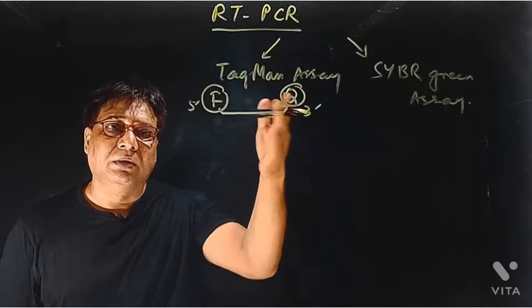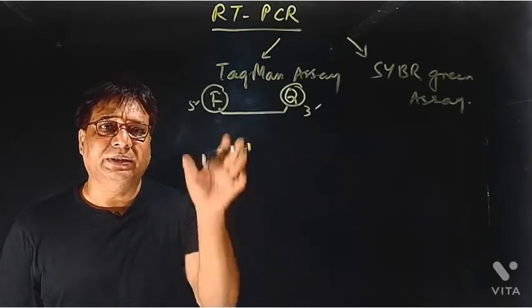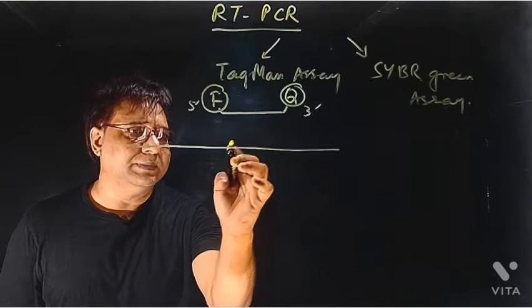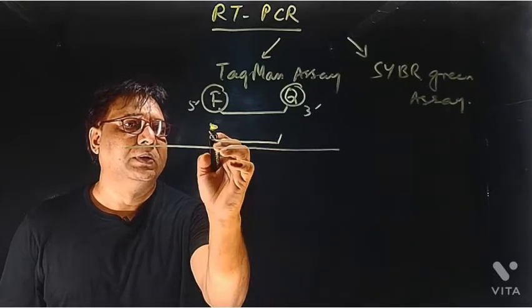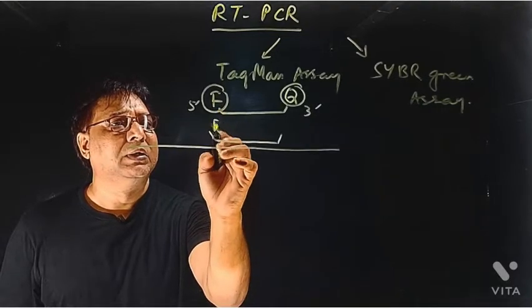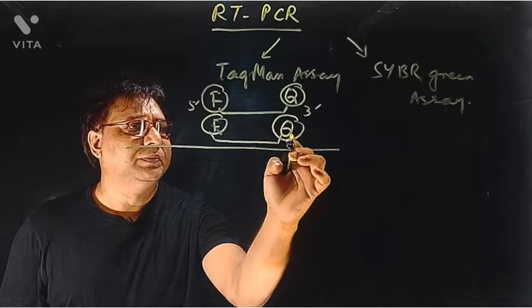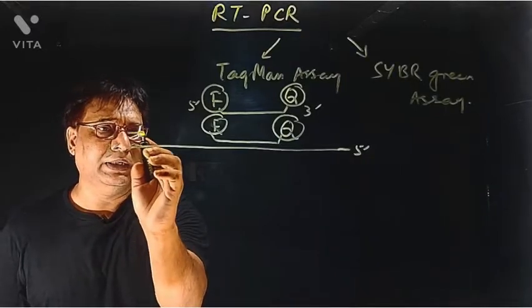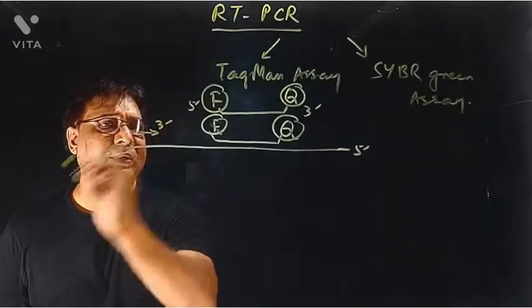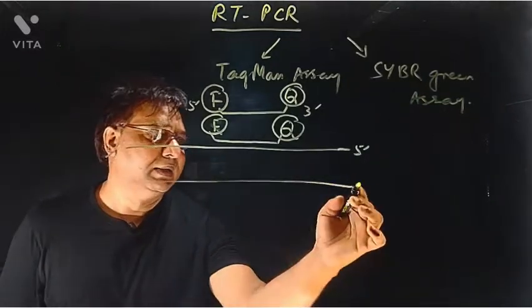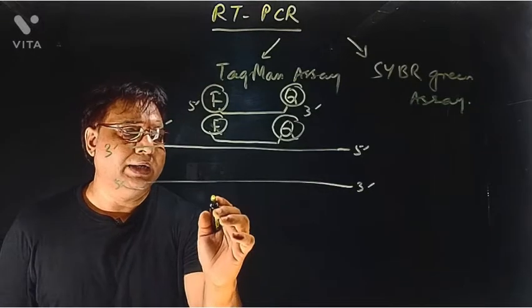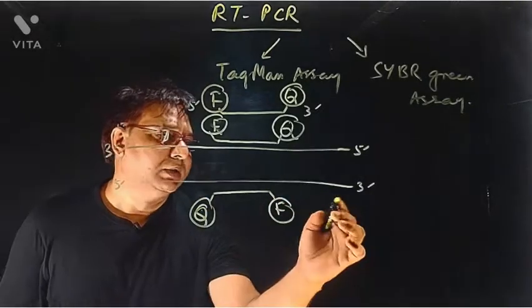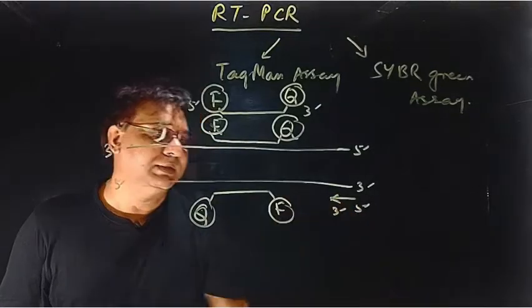There is a template DNA. Suppose this is the template DNA and this probe comes and binds at a position between the two primers. Suppose this is the quencher, and this is the 5' end and 3' end of the template. Your primer is bound here, 5' to 3'. In the other strand also, your probe has bound here with the fluorophore at the 5' end and quencher at the 3' end. The primer has again bound here, 5' to 3' direction.